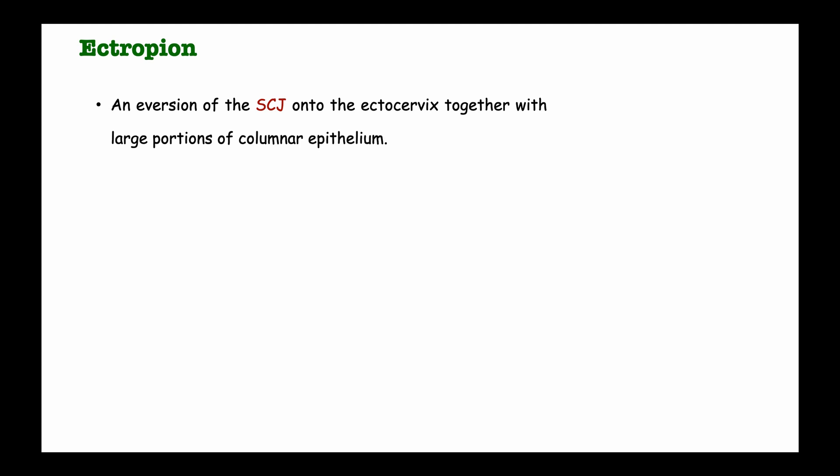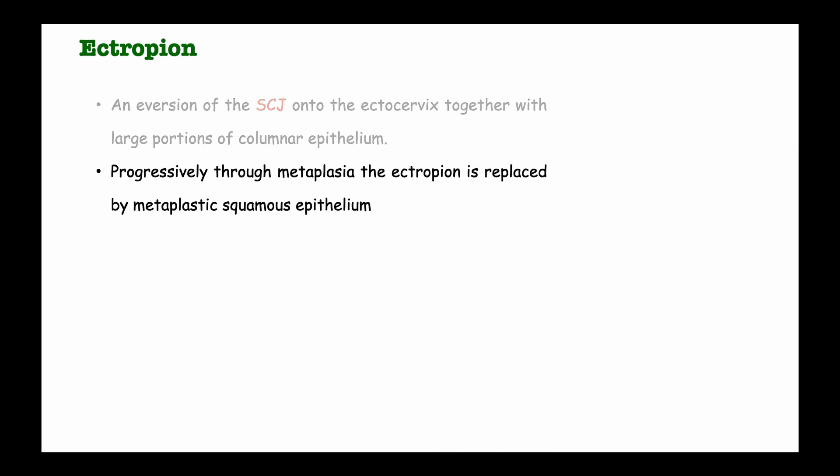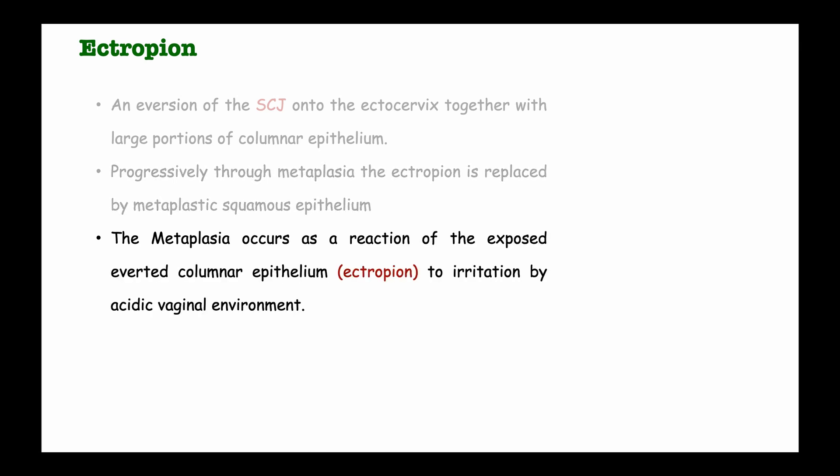Ectropion is an eversion of the squamous columnar junction onto the ectocervix together with large portions of columnar epithelium. Progressively through metaplasia, the ectropion is replaced by metaplastic squamous epithelium. This metaplasia occurs as a reaction of the exposed, everted columnar epithelium — the ectropion — to irritation by the acidic vaginal environment.